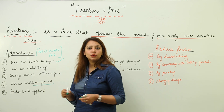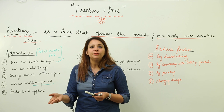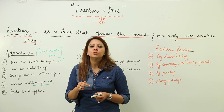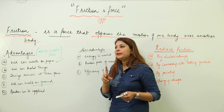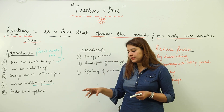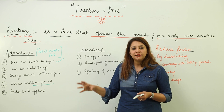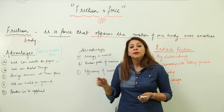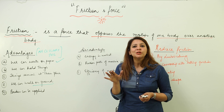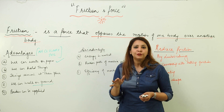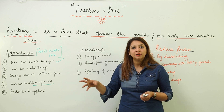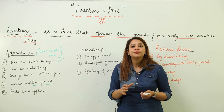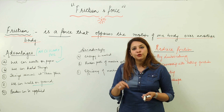We can also walk on the ground, again due to friction. There is friction between the sole of our shoe and the ground that enables us to walk. For example, if someone throws a banana peel and you step on it, you slip — because the inner surface of the banana is a slimy surface, meaning very little friction. So when you walk on the ground, friction is necessary.